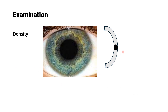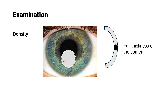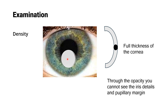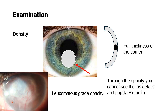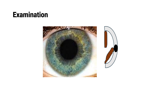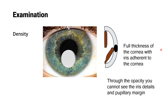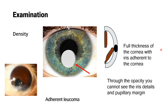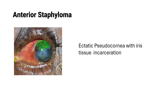If the opacity involves the full thickness of the stroma, it is called leucoma grade opacity. On torchlight, it appears as a whitish opacity and when you look through it, you can see neither the iris details nor the pupillary margin. For adherent leucoma — Grade 4 — the iris is adherent to and pulled into the leucomatous corneal opacity. You will not see any iris details or pupillary margin, but you will see that the iris is distorted and pulled toward the corneal opacity.